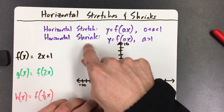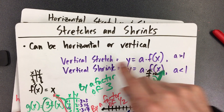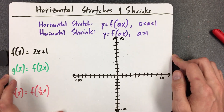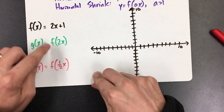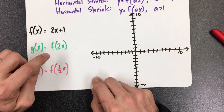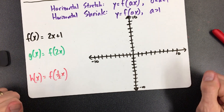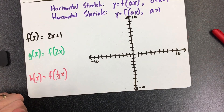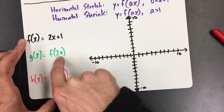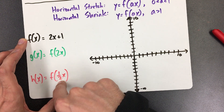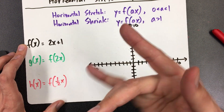How do I tell it's horizontal? I notice the number — the letter A — is inside the parentheses with the letter x. That's your dead giveaway. And immediately you need to think: everything is backwards. A number bigger than 1 is actually going to be called a shrink, and a number smaller than 1 is actually going to be called a stretch. When you state the factor, you have to take the reciprocal of whatever the actual number is.